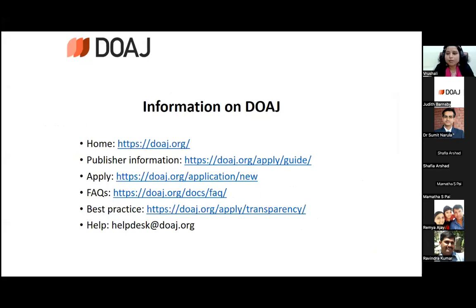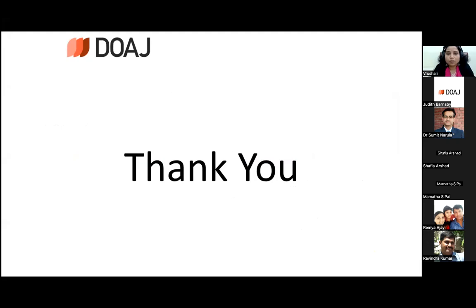If you want more information on DOAJ, the homepage is doaj.org. There is publisher information and an application guide if you want to apply. Frequently asked questions are available in the FAQ. The best practices guide on transparency is there. If you need help, you can drop a mail to the helpdesk at doaj.org. This was the basic introduction from my side. Now I will hand over to Judith, who will talk about the indexing criteria and more.